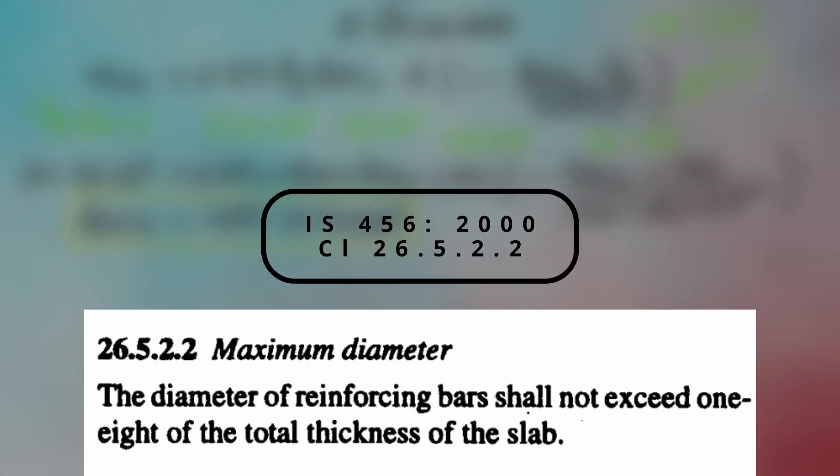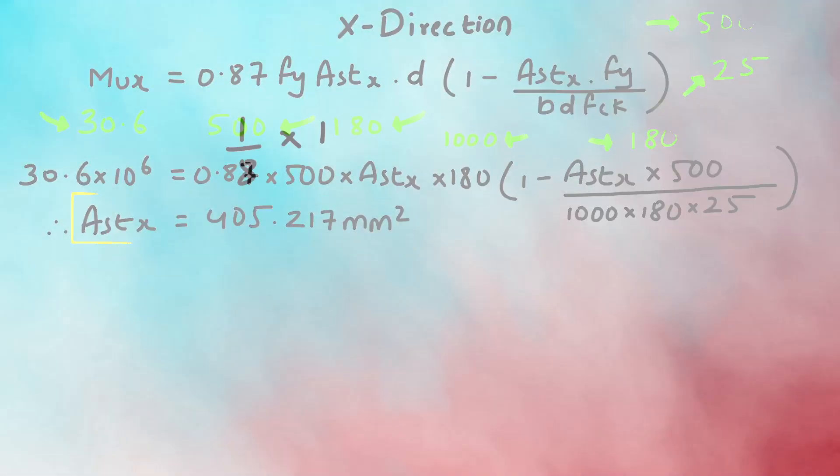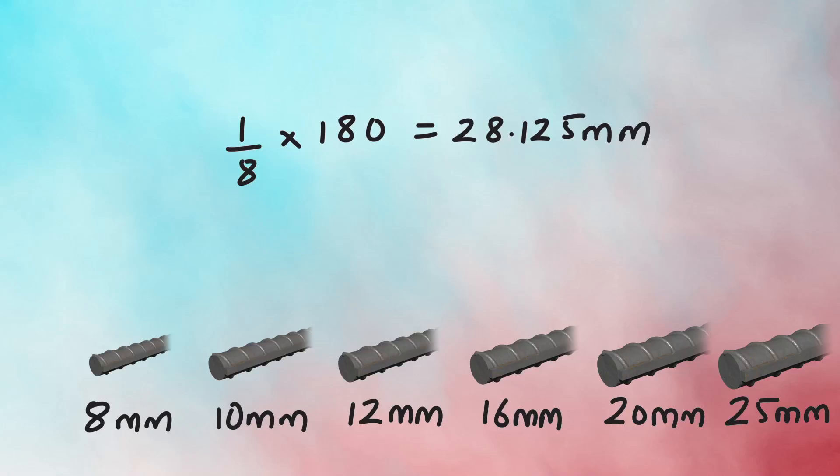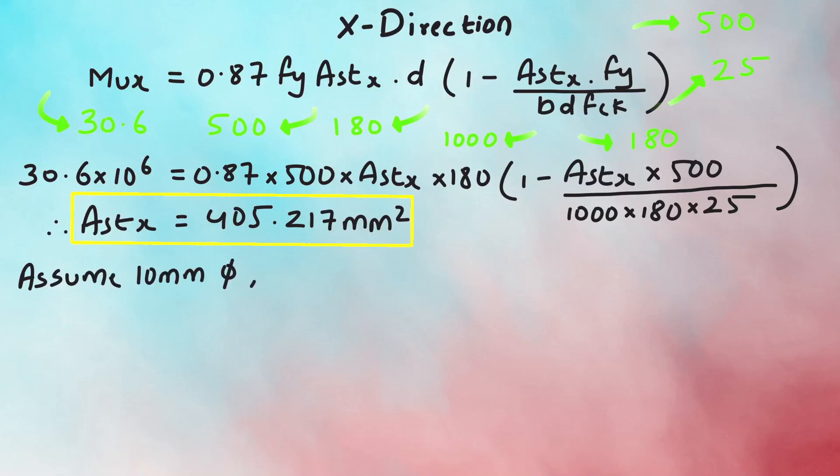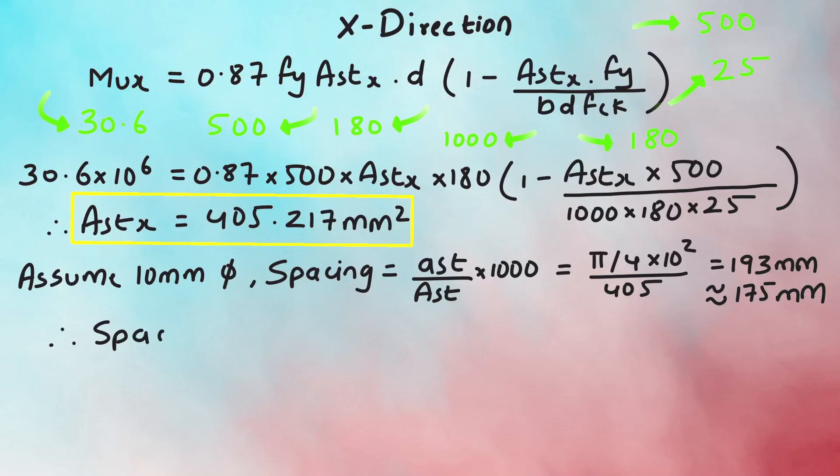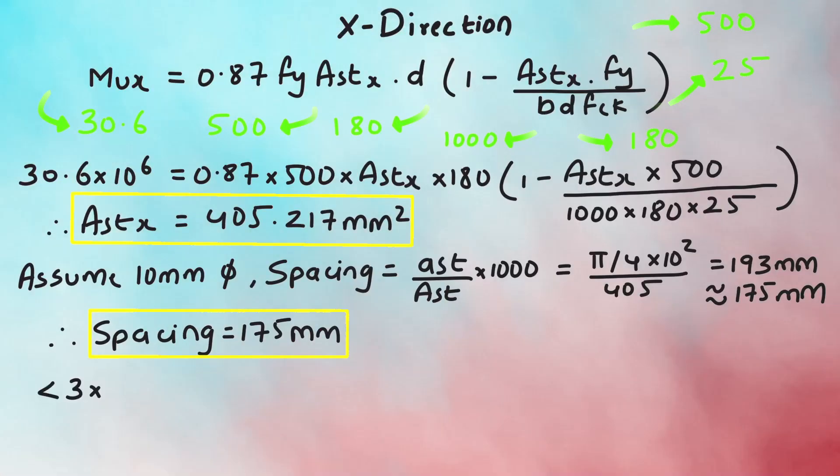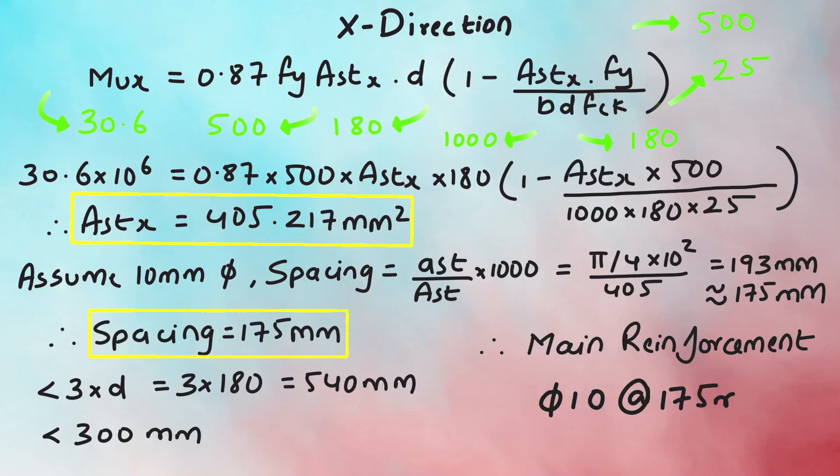Clause 26.5.2.2 says the maximum diameter of bar shall not exceed 1 eighth of the total depth of slab, which is 1 eighth of 180 that is 28.125mm, which means we can choose bars up to 25mm in diameter. Let's calculate spacing using 10mm bars. Spacing equals area of single bar divided by the area of steel required. Substituting the values gives the spacing of 193mm. So, let's take a spacing of 175mm. IS456 also has requirements for spacing as per clause 26.3.3B which says main reinforcement bars shall not be more than three times the effective depth of solid slab or 300mm whichever is smaller. Since our spacing is less than both the main reinforcement is designed as tor 10 at 175mm center to center.